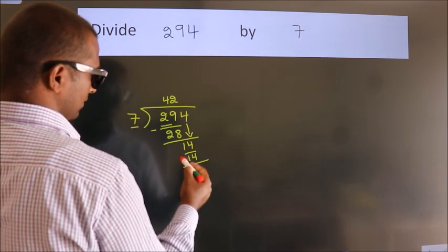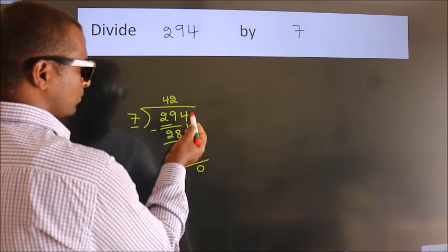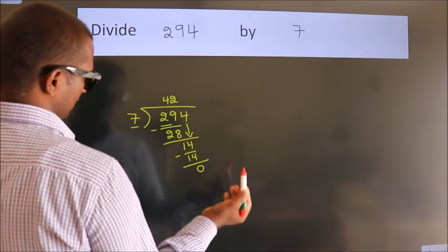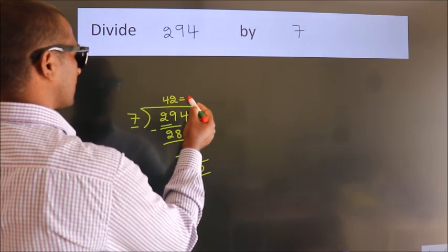Now we subtract; we get 0. After this, no more numbers to bring down. And we got remainder 0. So this is our quotient.